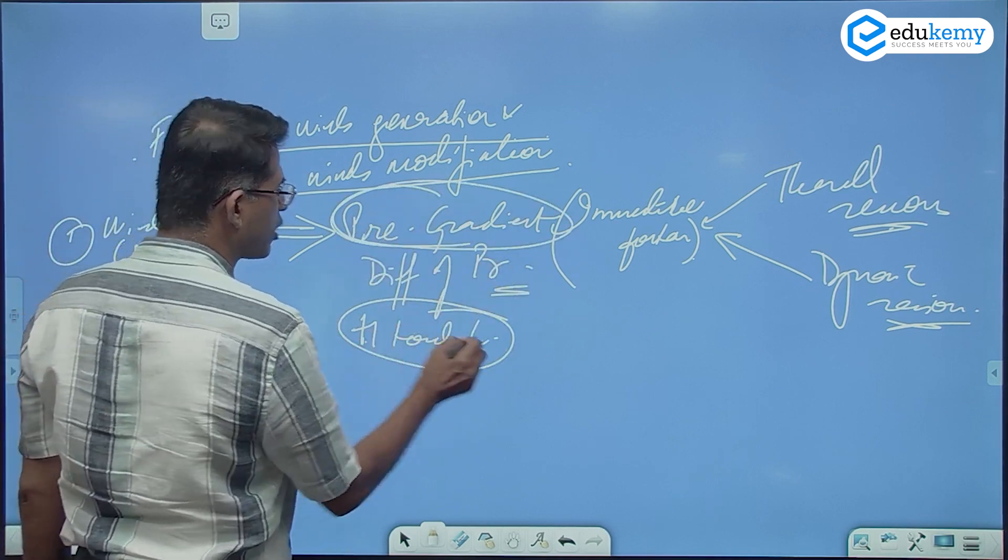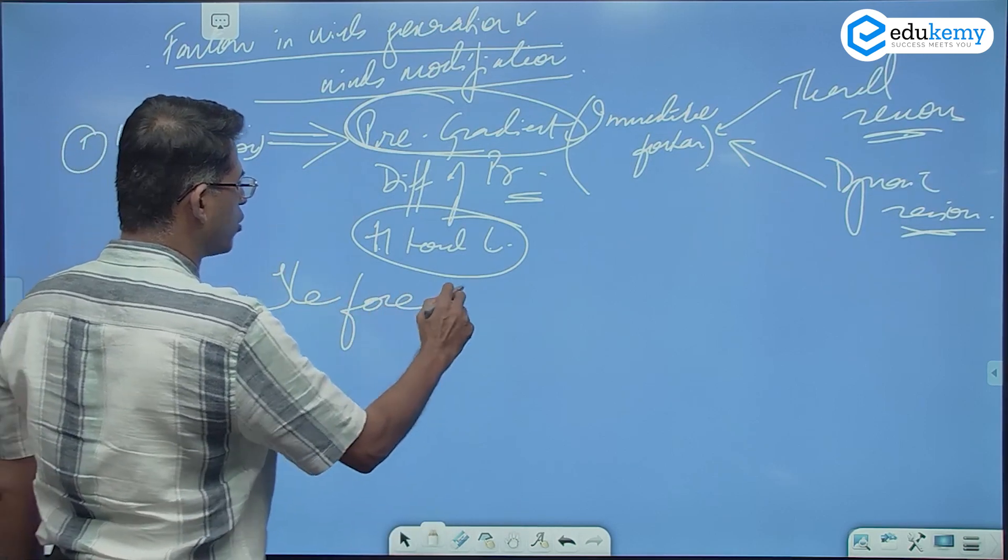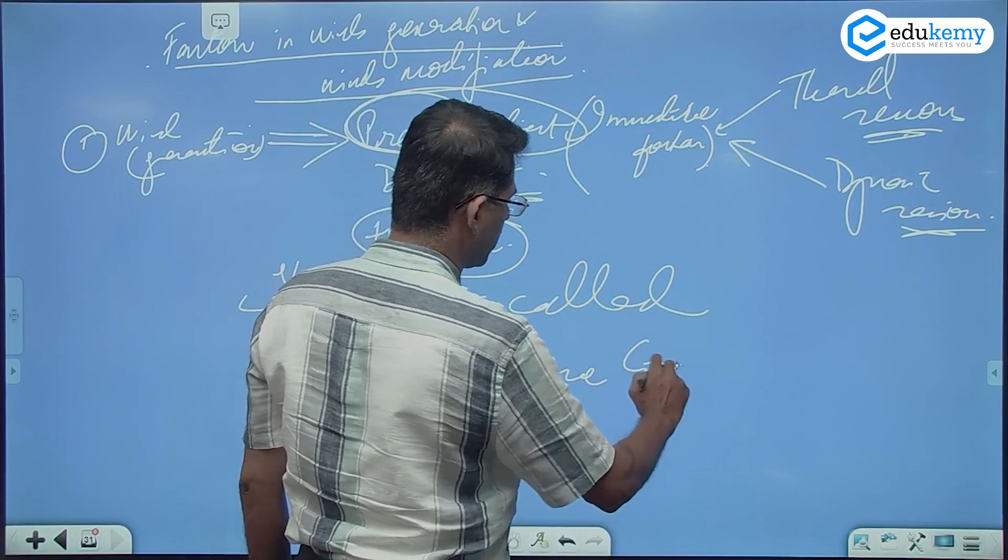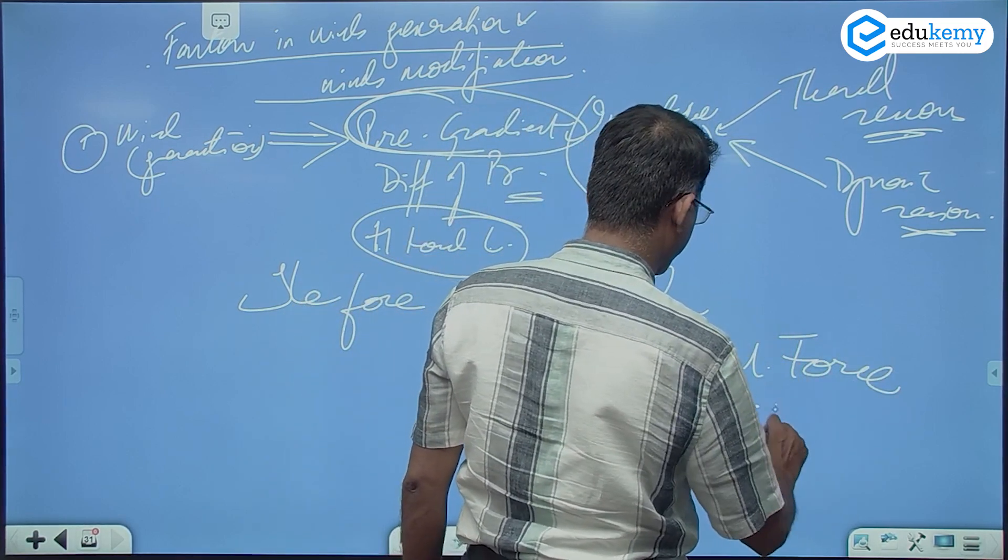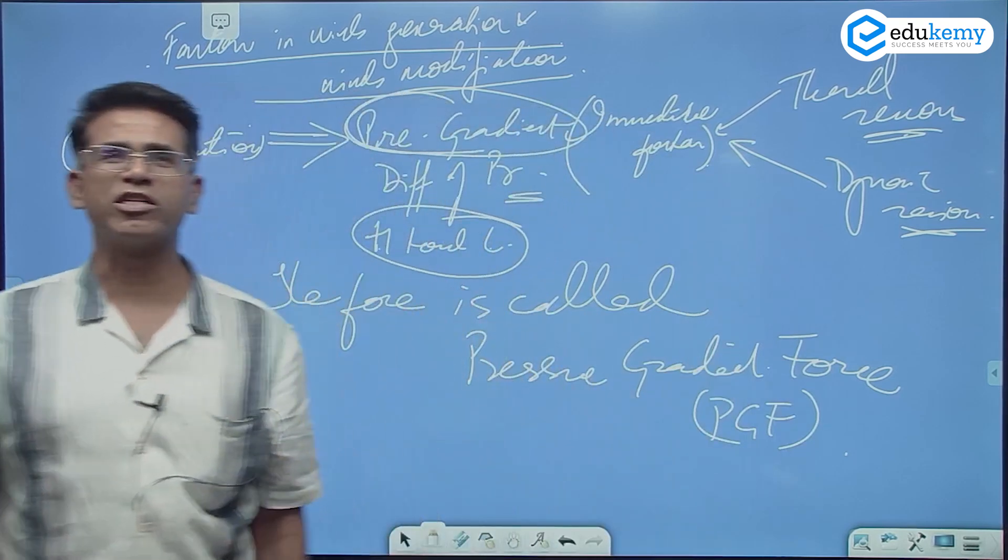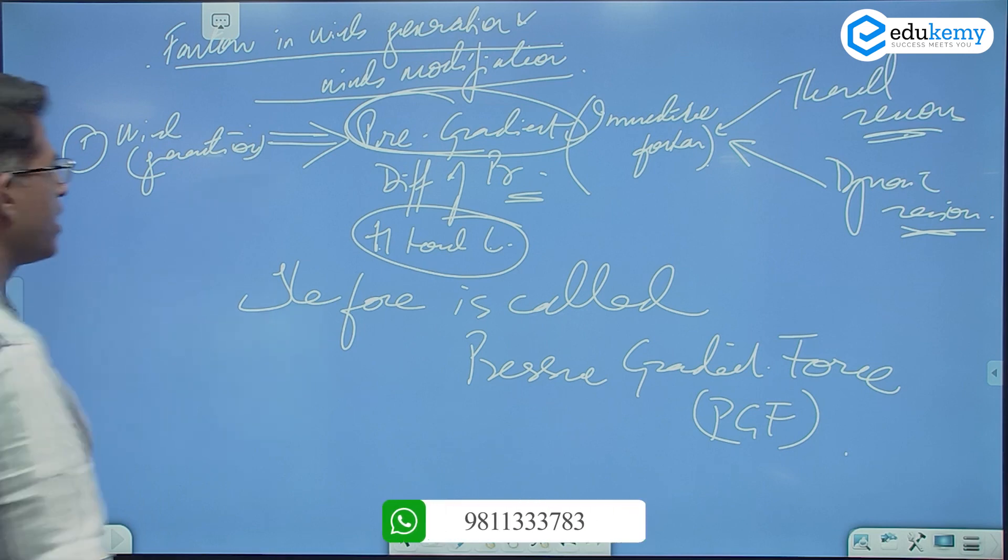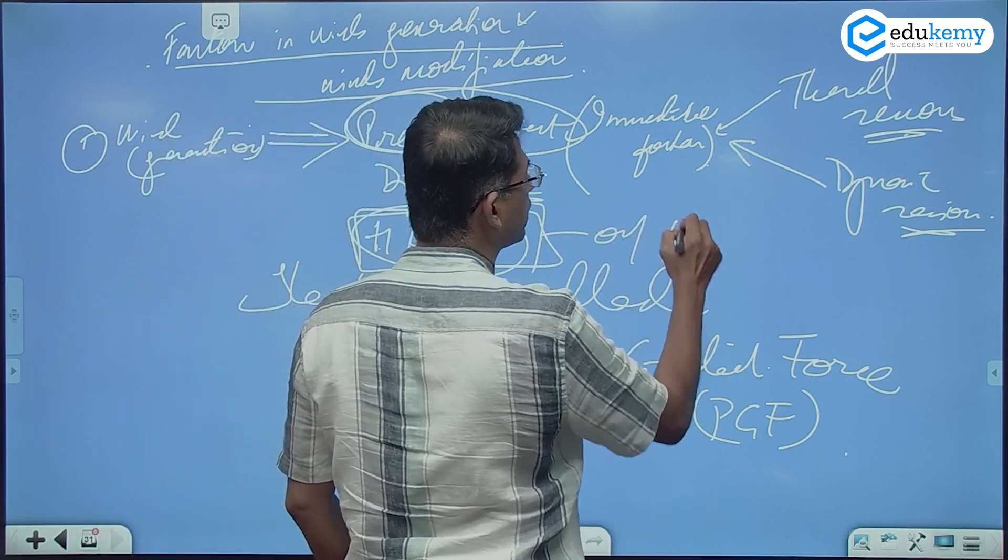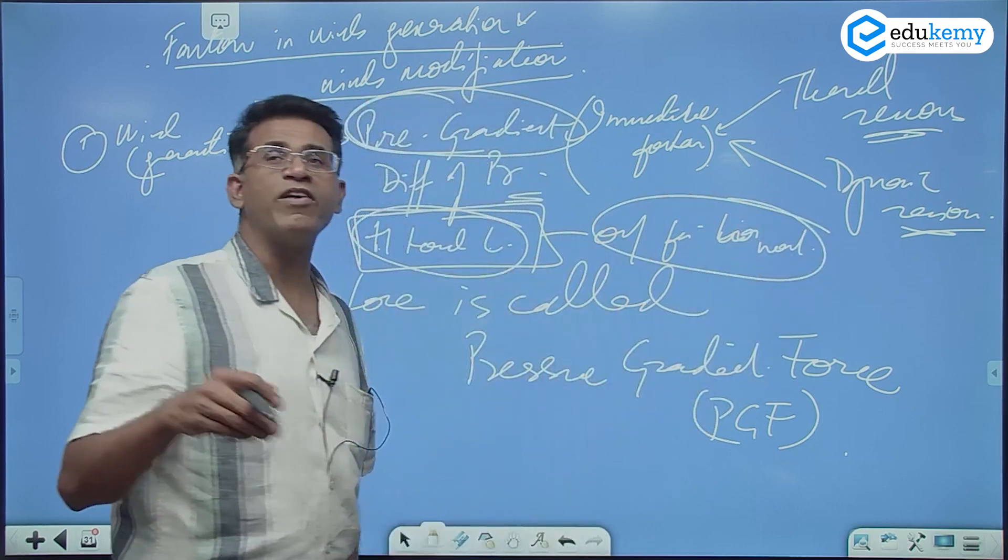I said winds always move from high towards low pressure. The force is called the pressure gradient force, PGF. The force is called as the pressure gradient force. High towards low ka rule kaha apply hota hai? Only for the horizontal movements. Because vertical wale ko to wind bolte hi nahi hai, right?